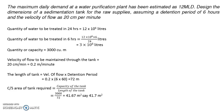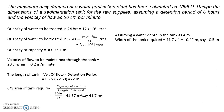Rounding off, the cross-sectional area is 41.7 m². This cross-sectional area equals depth × width. Assuming a depth of 4 meters, the width can be calculated as 41.7 ÷ 4 = approximately 10.5 meters. So far: length = 72 meters, width = 10.5 meters.